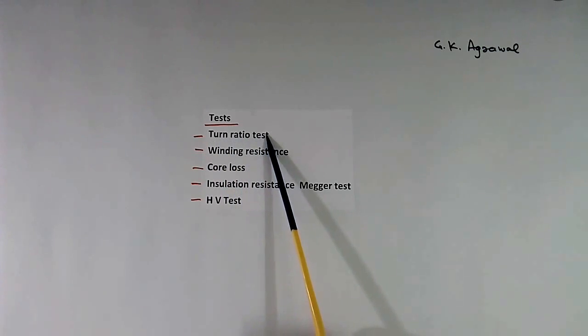Turn ratio test. Winding resistance, we will measure. Core losses, we will measure. Insulation resistance, this is also called megger test.